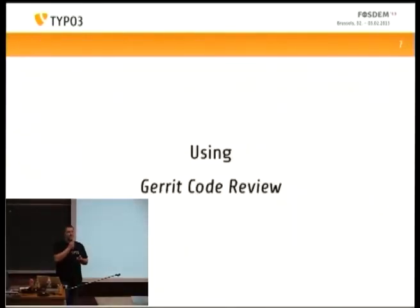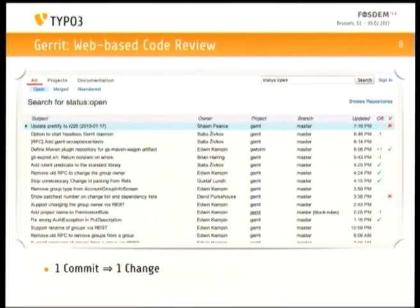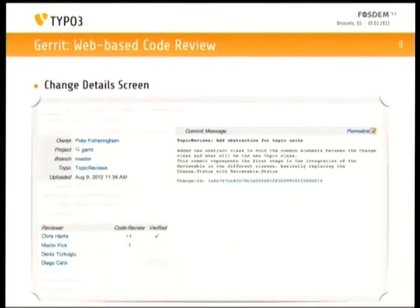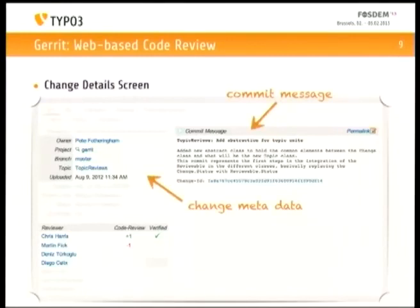So how does Gerrit code review look? You can use it in your browser — it's a web-based tool. That's the list of open issues for Gerrit itself. One line refers to one commit currently under review. You see who's the owner, which project, which branch, and whether the voting is positive or negative. When you zoom into a single change, you see metadata — for example the commit message, which is just a git commit message. You can see which branch it targets, define topics, and see if it's under review or already merged.